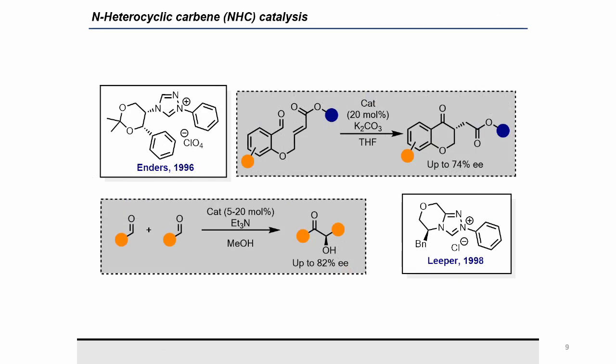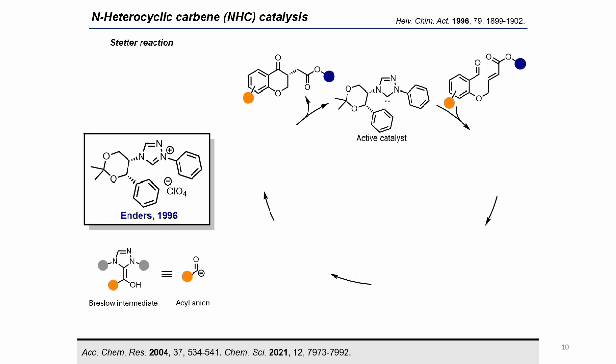Moving to the next type of organocatalyst, we have N-heterocyclic carbenes (NHCs). Although several attempts were made to achieve high enantioselectivity in the 1970s and 1980s, it was not until 1996 that Enders reported the first highly enantioselective Stetter reaction, closely followed by Leeper's benzoin condensation in 1998. NHC organocatalysts are typically stored as triazolium salts. These precatalysts are activated in situ in the presence of a base. The initial step of many NHC-catalyzed reactions involves the nucleophilic addition of an active NHC to aldehydes, leading to the Breslow intermediate.